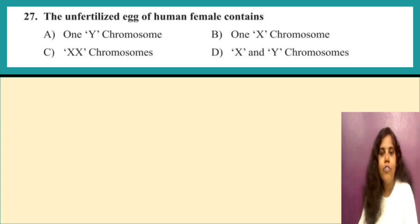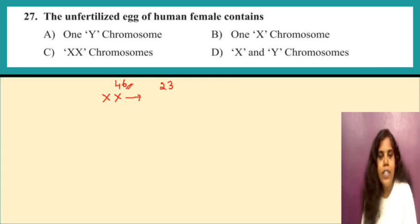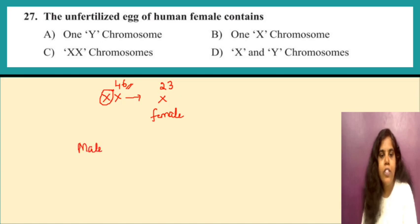Question 27: the unfertilized egg of a human female contains. In a normal female, there are 46 chromosomes total. In the egg it will be half — that is 23 chromosomes. Of these, only the X chromosome will be present. So the correct option is B: 1 X chromosome. Remember: for males, the sperm consists of the Y chromosome.